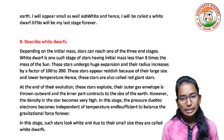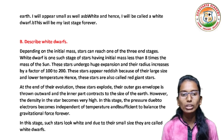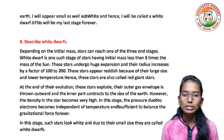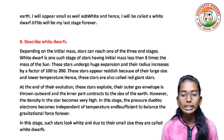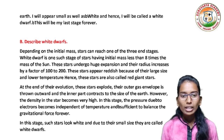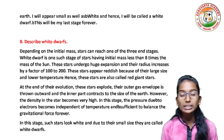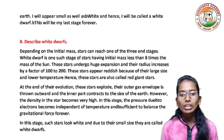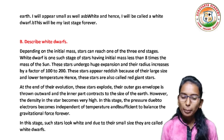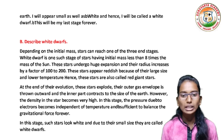Describe white dwarfs. Answer: depending on the initial mass, stars can reach one of three end stages. White dwarf is one such stage — for stars having initial mass less than 8 times the mass of the sun. These stars undergo huge expansion and their radius increases by a factor of 100 to 200, and these stars appear red because of their large size and lower temperature; hence they are also called red giant stars. At the end of their evolution, these stars explode. Their outer gas envelope is thrown outward and the inner part contracts to the size of the earth. However, the density in the star becomes very high. In this stage, the pressure due to electrons becomes independent of the temperature and provides sufficient balance to the gravitational force forever. Such a star looks white and due to their small size, they are called white dwarfs.